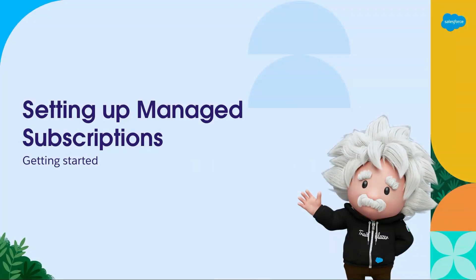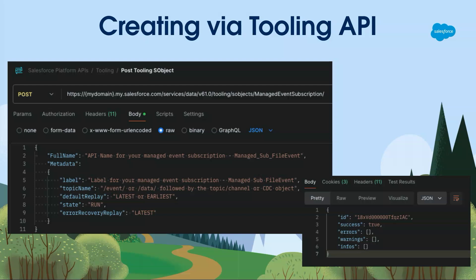How do you get started and set up managed event subscriptions? There are two ways. You can use the Tooling API — here's an example of a request in Postman. Using the Tooling API endpoint for managed event subscriptions, you send a POST request with a JSON payload. You give it a full name — that's the API name you use to subscribe — and using Salesforce naming conventions, you can structure that however your org does it. The label is just the record label for the managed subscription you're creating.